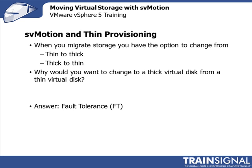Before showing you how to perform a Storage vMotion, let me point out that Storage vMotion and thin provisioning are related. When you do a Storage vMotion, you have the option to migrate the virtual machine disk file from a thinly provisioned disk to a thickly provisioned disk, or vice versa. Why would you want thick if you're already using thin? The answer is fault tolerance — VMware fault tolerance requires thickly provisioned virtual disk. You could also use Storage vMotion to reduce disk footprint by converting from thick to thin provisioned, utilizing less space in your storage array.